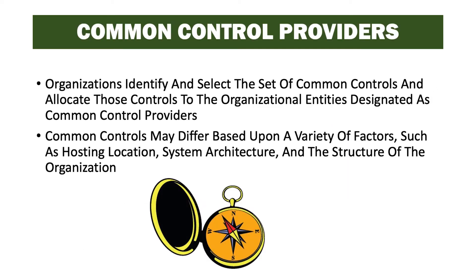Common control providers are those groups or organizations responsible for maintaining these sets of controls. This includes processing the controls through the RMF, and when authorization to operate is granted, the controls can then be inherited by system owners. Organizations identify and select the set of common controls and allocate those controls to the organizational entities designated as common control providers. Common controls may differ based upon factors such as hosting location, system architecture, and the structure of the organization, so different common control providers may provide the same controls in different parts of the organization.